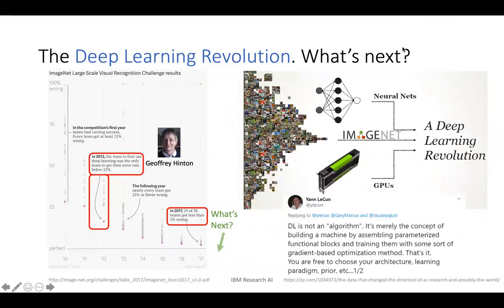Let's start by looking back at the deep learning revolution. Deep learning, and especially neural networks, has brought a lot of excitement and contributed to the advances of AI technology. We can see that in the past few years the classification error on ImageNet has continued to decrease at a very rapid speed, even surpassing human performance.